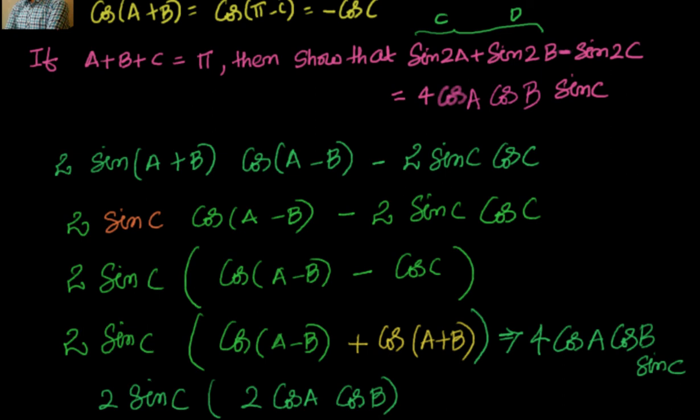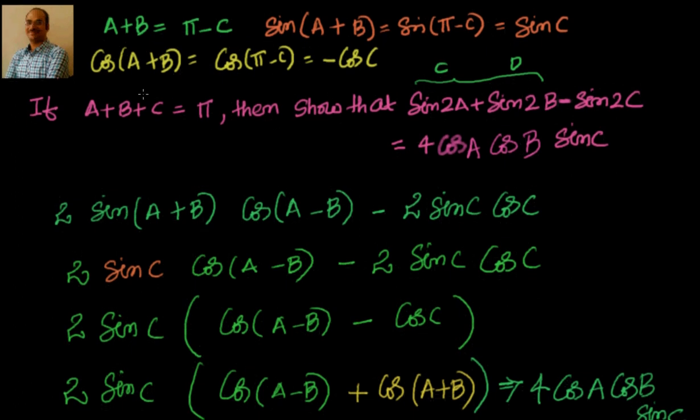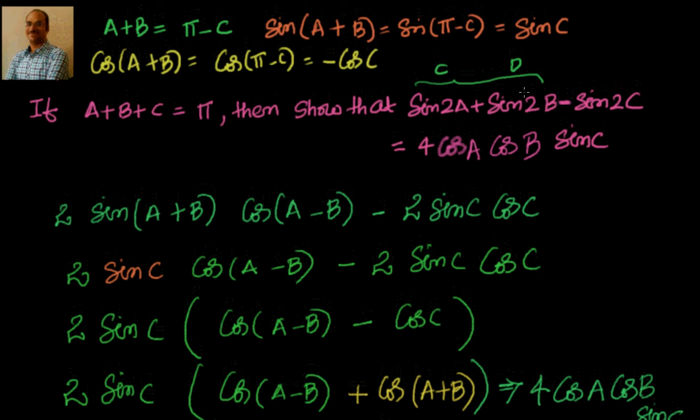Now you are very familiar with this. You want to try this one. For the same set of conditions, that means a, b, c are angles of a triangle, what is the value of sin 2a minus sin 2b plus sin 2c? So let us see what value you got in the next video where I am going to solve it. See you in the next video. Thank you.